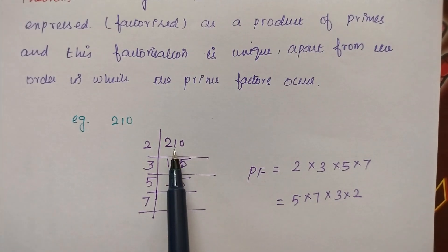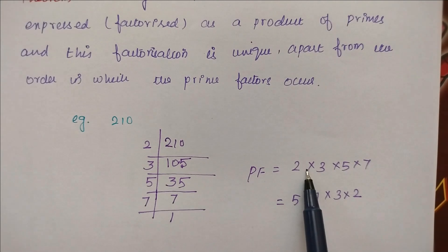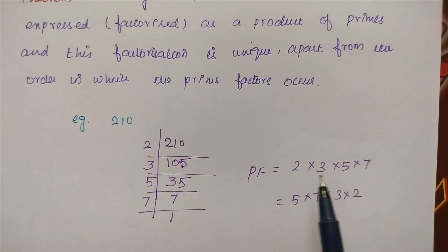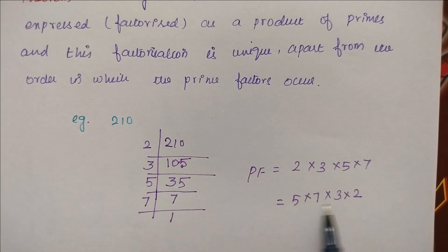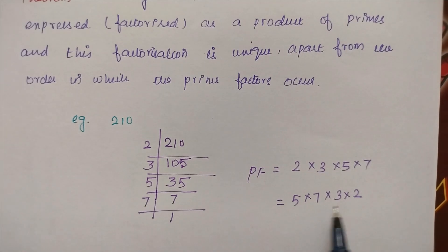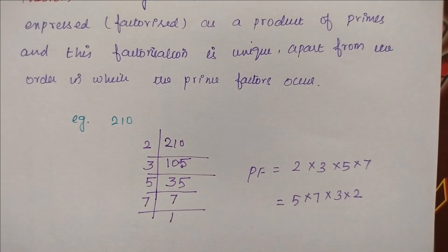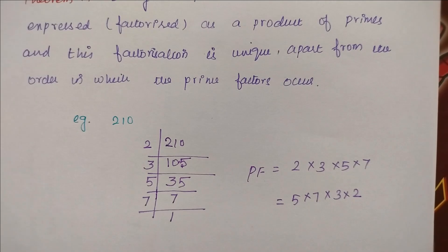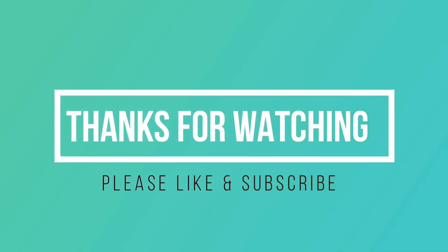So every composite number can be expressed as a product of primes, and this factorization is unique apart from the order in which the prime factors occur. This is the fundamental theorem of arithmetic. If you like this video, please like, share, and subscribe. Thank you.